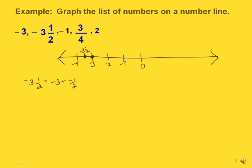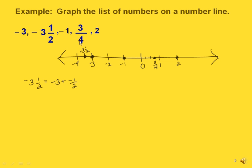Now let's look at the next number in the list, which was negative 1. That's right there. Now the last two in our list are positive numbers. The first one is 3 fourths, so let's graph 1 here. Remember to graph 3 fourths, we need to divide the distance between 0 and 1 up into 4 equal parts. Each one of those is 1 fourth, so we're going to start from 0 and count to the right 3 of those parts, and that gives us 3 fourths. And last of all, 2 is just a whole number, so we can go over and graph the 2. So now we have all five of the numbers in our list graphed.